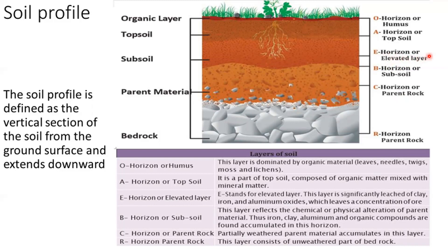Above the B horizon we have the E horizon, which is the eluviated layer — E stands for eluviated. This layer is significantly leached of clay, iron and aluminum oxide, leaving a concentration of minerals. Above the E horizon we have the A horizon, also called topsoil, which is composed of organic matter mixed with mineral matter. And at the very top on the ground we have the O horizon, or humus layer. This layer is dominated by organic materials like leaves, needles, twigs, moss and lichens.